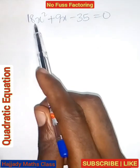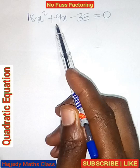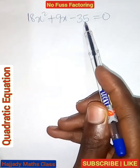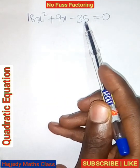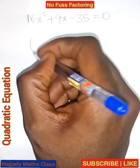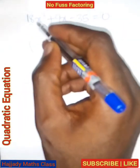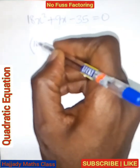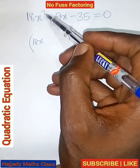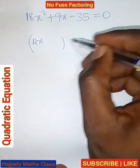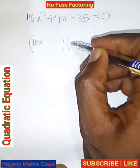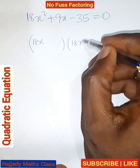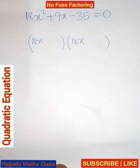Here we have 18x squared plus 9x minus 35 equals 0. The first thing we do is that here we have the 18x. Don't worry about the square, leave it. Close the bracket, open another bracket. We have the 18x. Close the bracket.